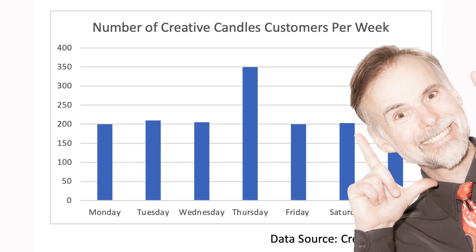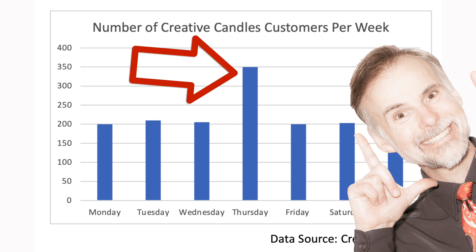In summary, a column chart is a great way to quickly identify trends in a data set. Remember to highlight any particular high and low points in the chart, as well as any patterns or anomalies if they exist.